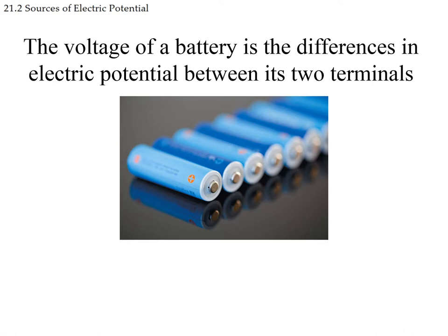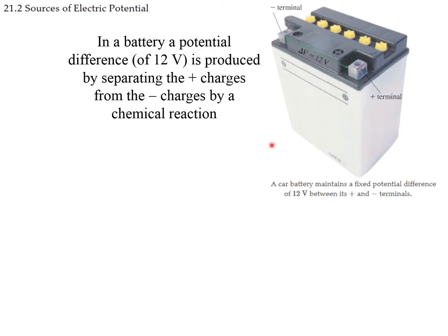A battery is a method of storing energy. All batteries have a negative end and a positive end and are rated with a voltage. The voltage of a battery is the difference in electric potential between the two sides. For instance, in a car battery the difference between the two poles is 12 volts, and the charges are separated by means of chemical reactions inside.